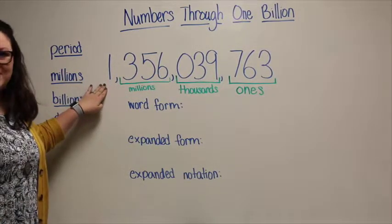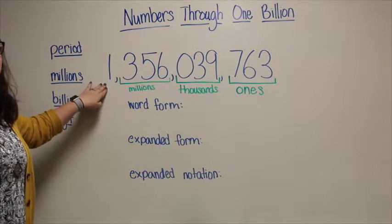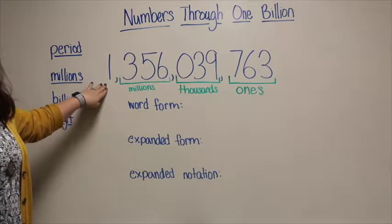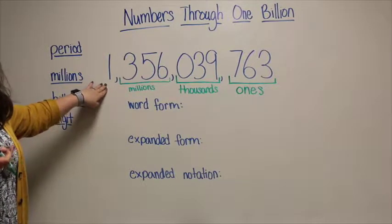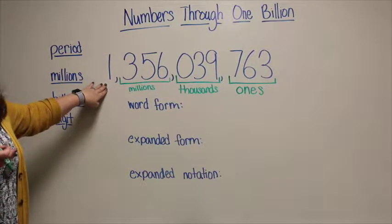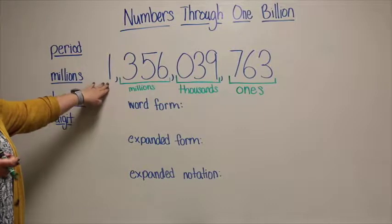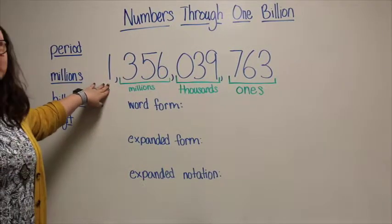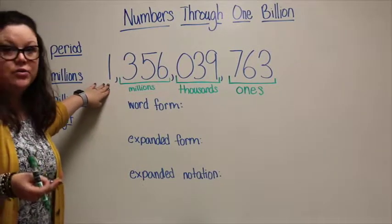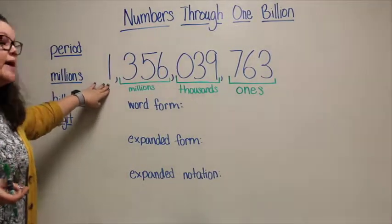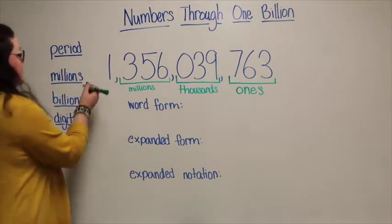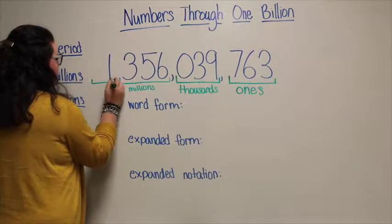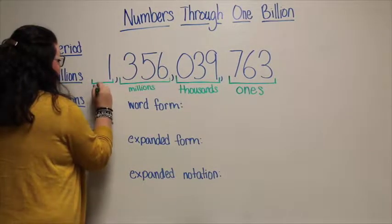My next period only has one digit in it, and that's okay. It does have three place values in this period, but we just have one for today. Especially in fourth grade, we only go through the billions place, so this would be my billions period.